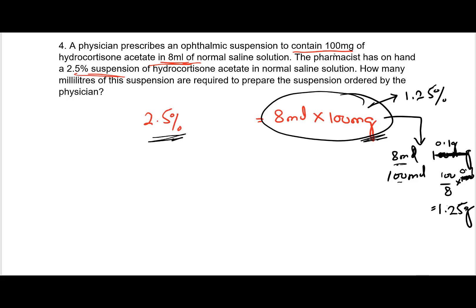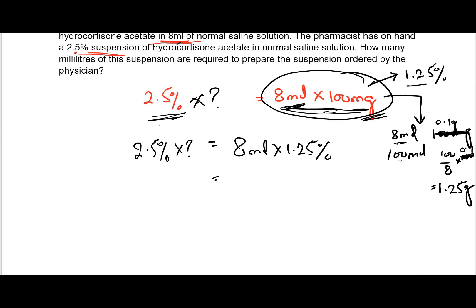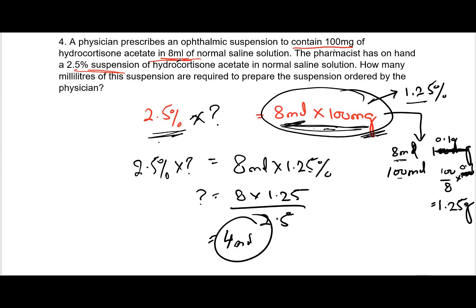Now I have percentages on both sides and volumes on both sides, so I can apply C1V1 = C2V2. C1 = 2.5%, V1 = unknown; C2 = 1.25%, V2 = 8 ml. Solving: V1 = (8 × 1.25) / 2.5 = 4 milliliters. So I need 4 milliliters of this 2.5% suspension.